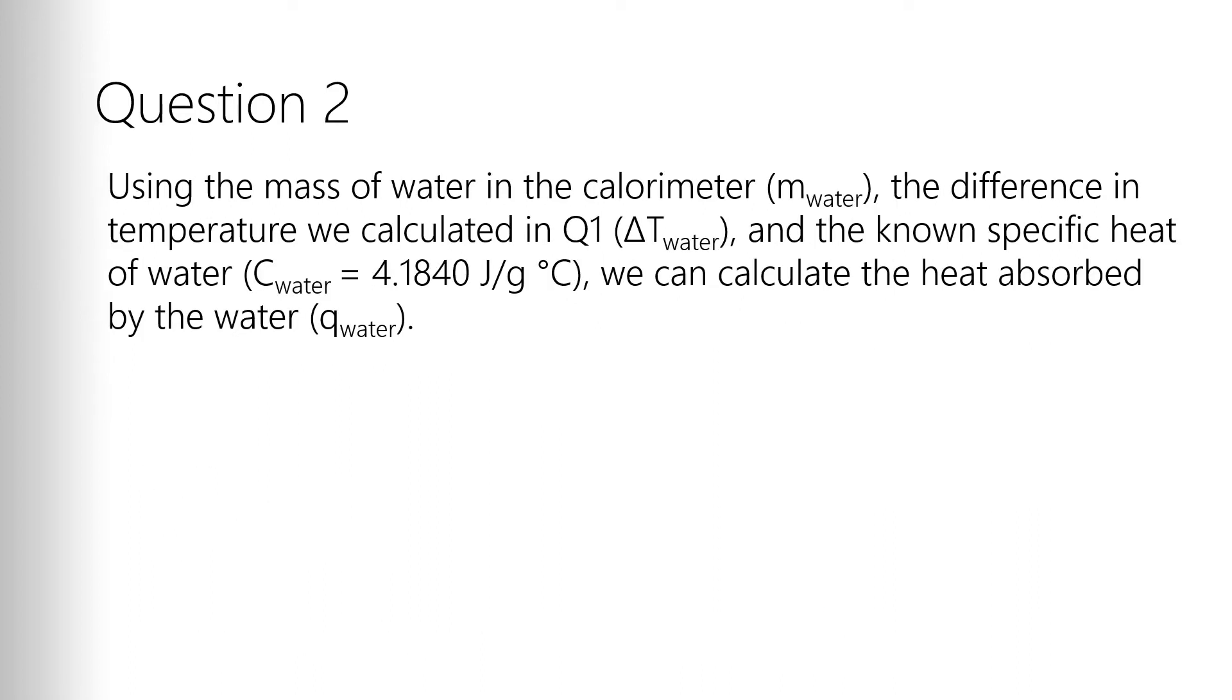Our second thing is we need to figure out the heat. How much energy was absorbed by that water? We can do that with the heat equation, q equals mc delta t. We just have to make sure we have all the components of that. We measured the mass of the water in the calorimeter. Again, that's on JetNet. So that's mass of water. We just calculated the difference in temperature in question one, so that's delta t. And we know the specific heat of water because that's a constant, 4.1840 joules per gram degree Celsius. So we can calculate q.